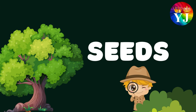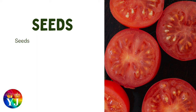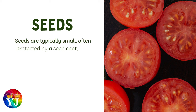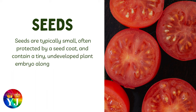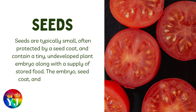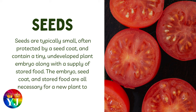Seeds are typically small, often protected by a seed coat, and contain a tiny, undeveloped plant embryo along with a supply of stored food. The embryo, seed coat, and stored food are all necessary for a new plant to grow and develop.